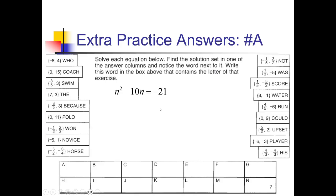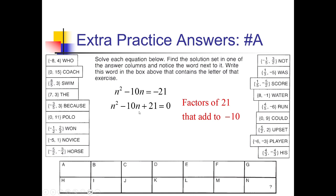Here we go with problem A. Before I can solve this by factoring, I need to put it in standard form, which means this negative 21 needs to be moved over to the left, so I'll add 21 to the left side. Now I'm looking for factors of 21 that add up to negative 10. 3 and 7 works if we have both of them negative. So I can split this up into n minus 3, n minus 7, and zeroing each of those out, we end up with n equals positive 3 and positive 7. I see 7 and 3 right here, so I'm going to put 'the' in box A.